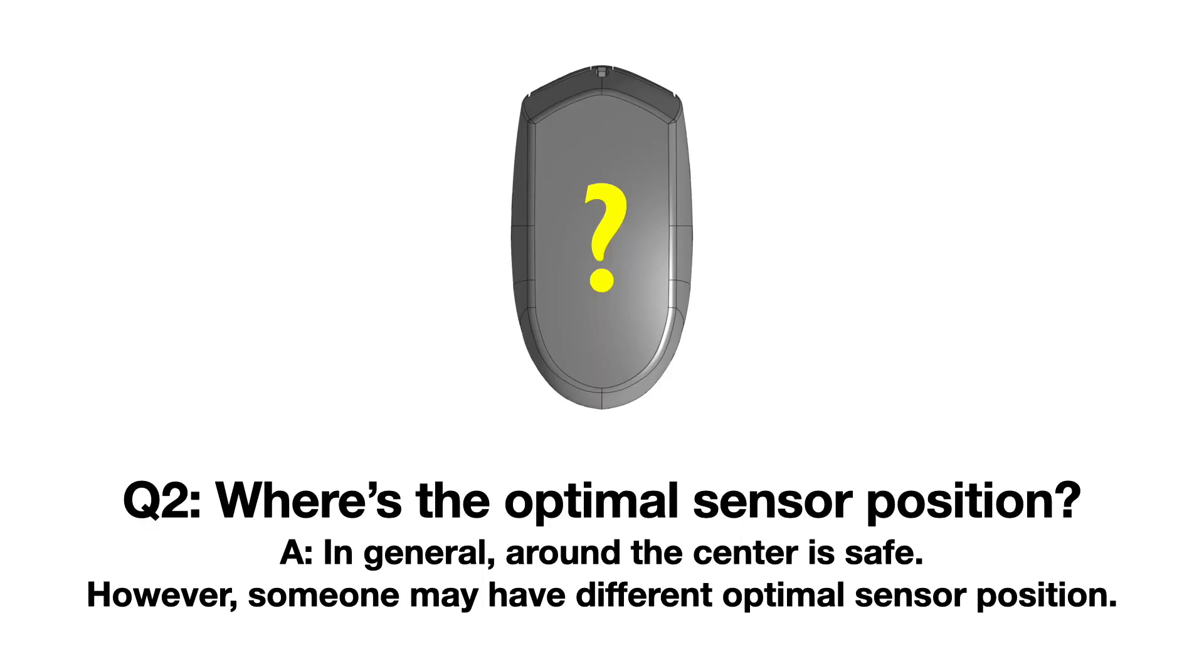The user experiment answers the second question. So where's the optimal sensor position? In general, that's around the center. However, each individual may have different optimal positions.